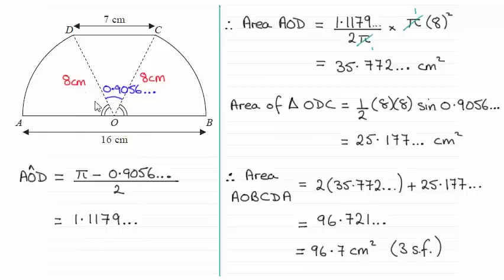So when it comes to working out the area of a sector, all we need to do is say it's a fraction of the area of a complete circle. That fraction is the angle, 1.1179 radians, compared with a full turn of a circle, which in radians is 2π. So it's this fraction of the area of a circle, πr². So you can see it's going to be π times the radius squared of 8. And the π's cancel, and it gives me this answer here: 35.772 and so on centimeter squares.